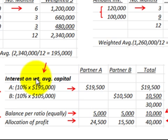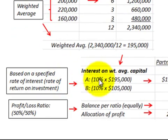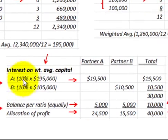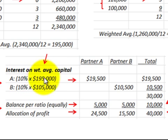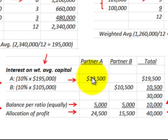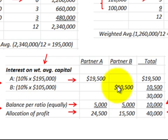Now we calculate interest on the weighted average capital, which is how we allocate profits. Using the agreed-upon 10% interest rate: Partner A's allocation is 10% × $195,000 = $19,500. Partner B's allocation is 10% × $105,000 = $10,500. The total amount allocated through this interest method is $19,500 + $10,500 = $30,000.